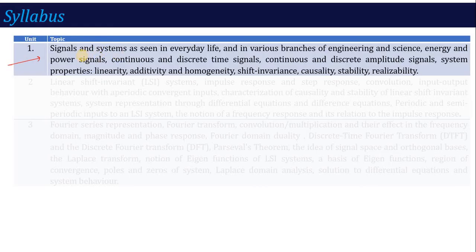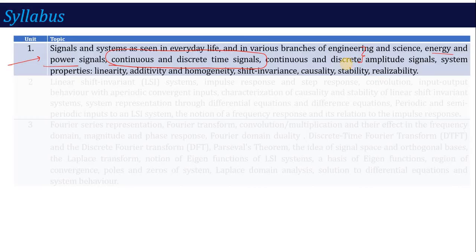We will look at the different types of signals we encounter in our daily life and in various branches of engineering — signals like unit step, ramp, impulse, and many more. Signals are divided into two categories: continuous and discrete time signals. Further classification includes energy signals, power signals, periodic signals, non-periodic signals, even signals, and symmetric or asymmetric signals.